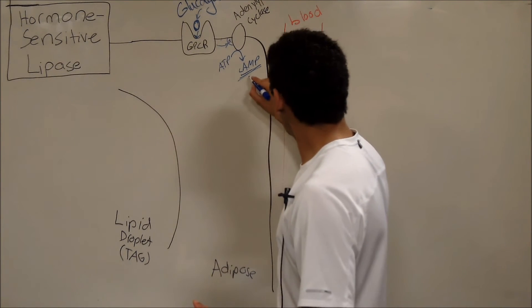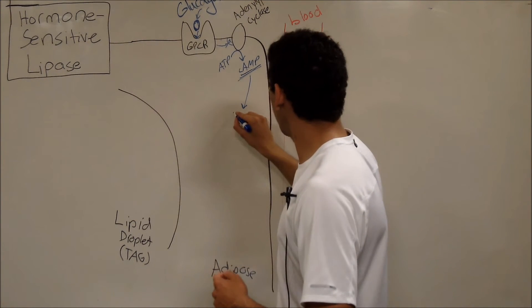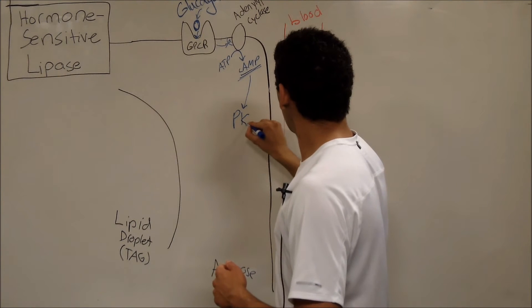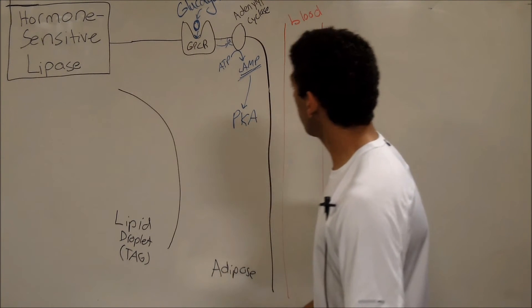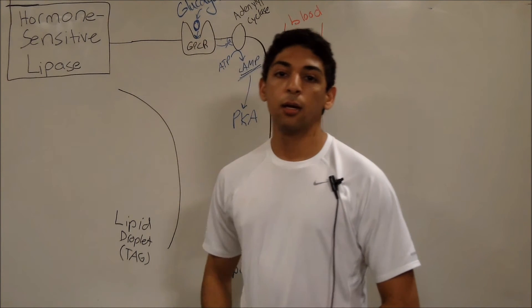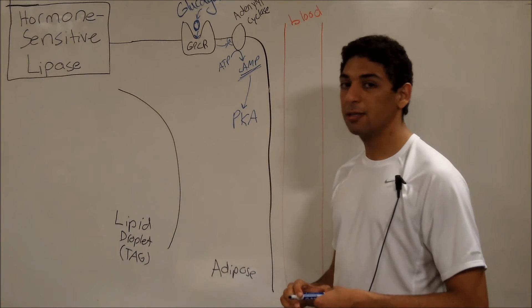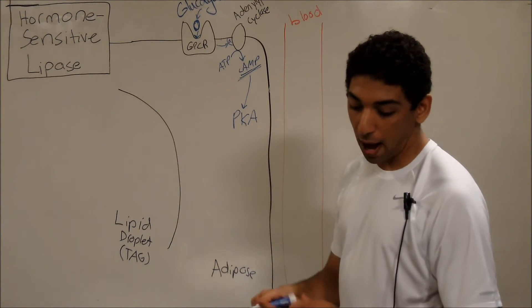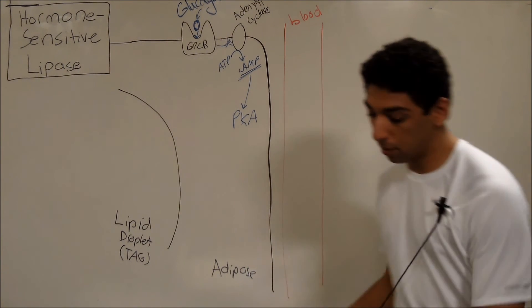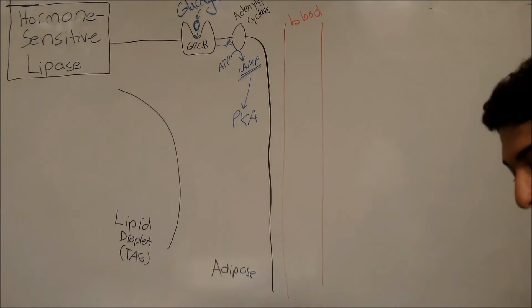Now, what does cyclic AMP do? Cyclic AMP comes in and it activates protein kinase A. That's nothing new. That's also from the last test. So now we've got this activated protein kinase A. And now what does protein kinase A do? Well, it's a kinase, and kinases phosphorylate things. And so it actually goes, let me get a different colored marker here. It actually goes and phosphorylates two different things.